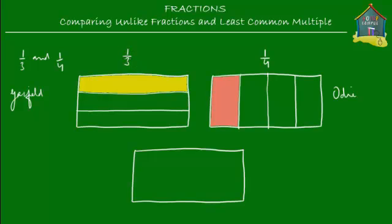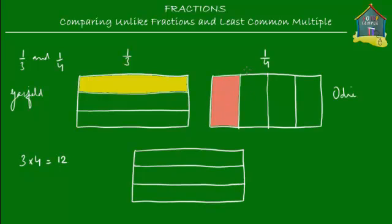You have to convert the denominators of both fractions — three and four — so they have a common denominator, meaning the same denominator. One method is to take both denominators and multiply them: three times four equals twelve. So you change the denominators of one-third and one-fourth to twelve. That means you make three horizontal cuts and then four vertical cuts on the same lasagna.